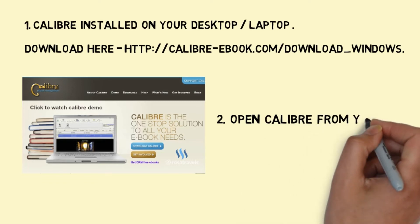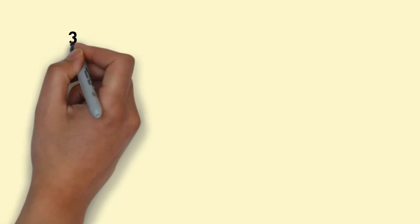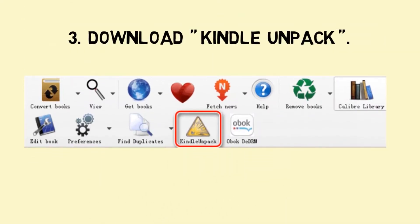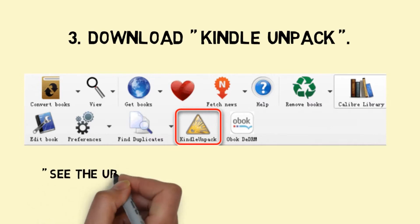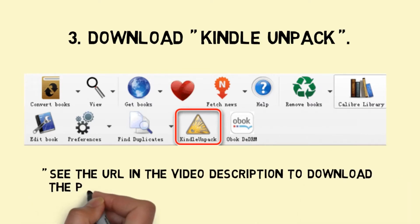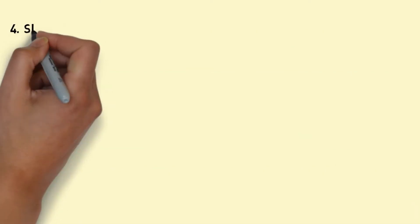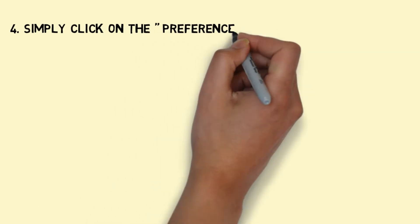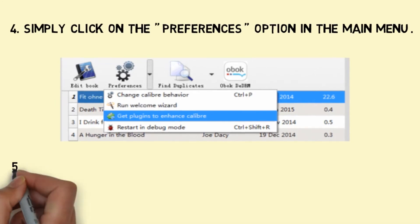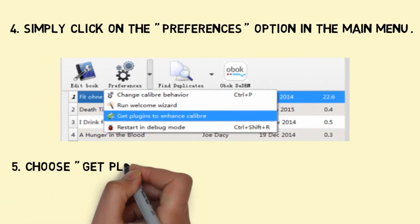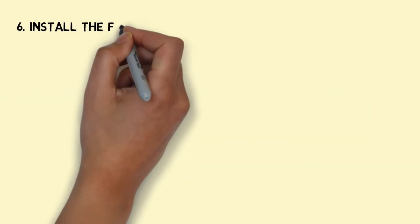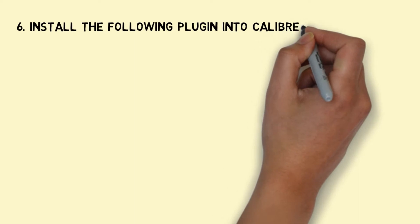Step 2: Open Calibre from your computer. Step 3: Download Kindle Unpack — see the URL in the video description to download the plugin. Step 4: Simply click on the preferences option in the main menu. Step 5: Choose Get plugins to enhance Calibre. Step 6: Install the following plugin into Calibre — Kindle Unpack.